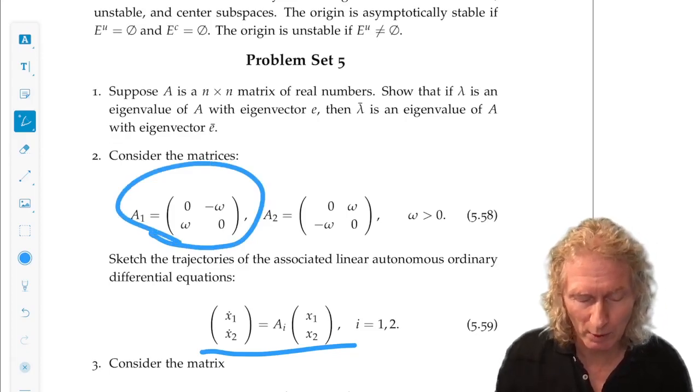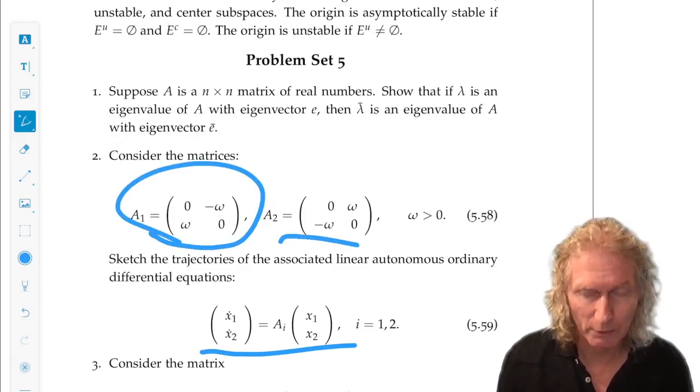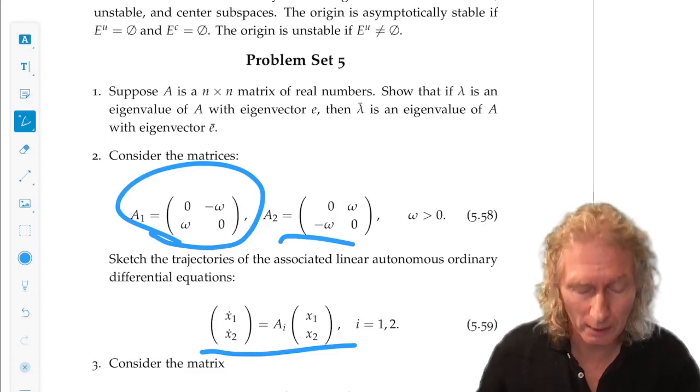Now you solved for the flow generated by a matrix of this type earlier on, if you worked out that problem, and you're going to see how it differs if you swap the signs of the off-diagonal elements.